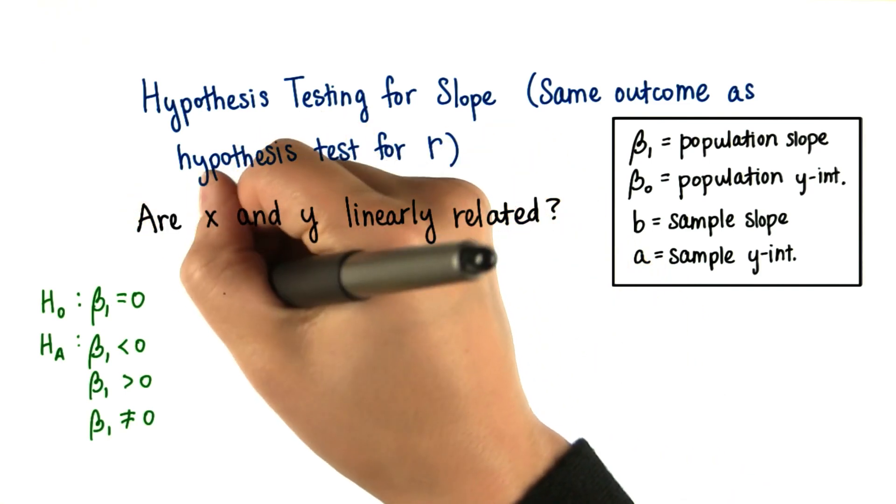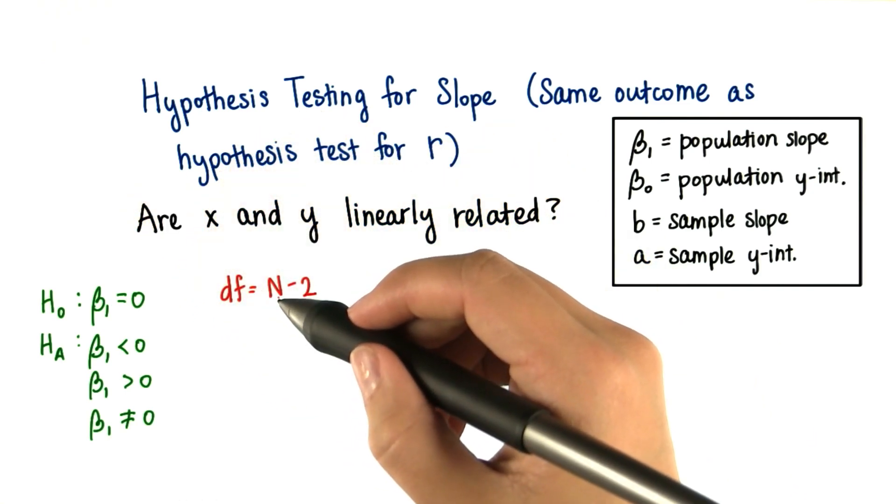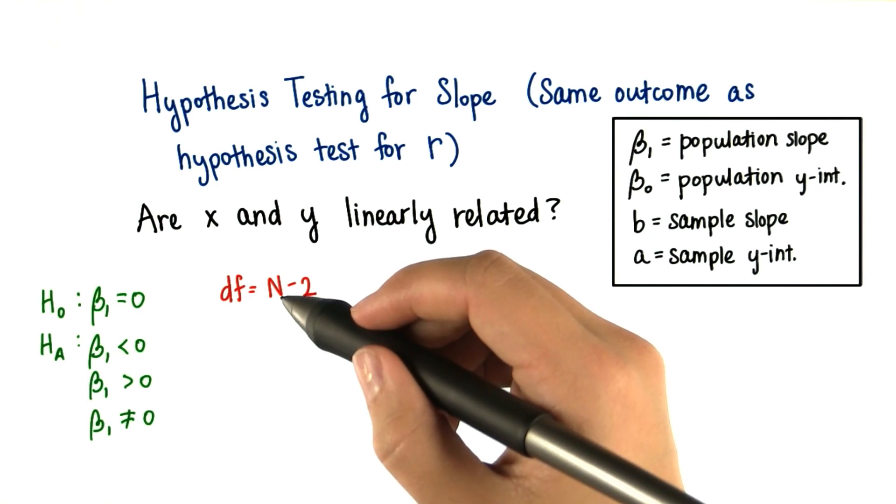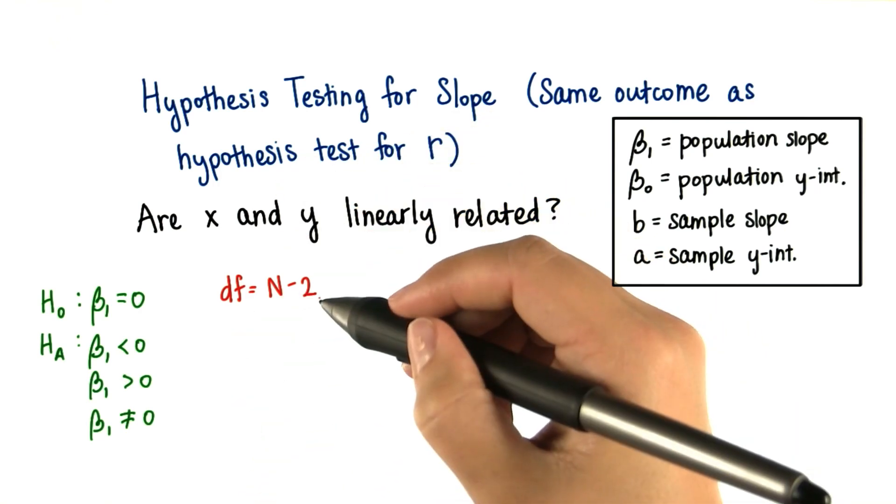The degrees of freedom are n minus 2, where n is the number of data points. So we have n values of x and n values of y.